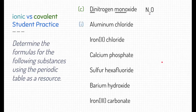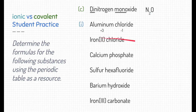Aluminum chloride is ionic — it's made of a metal and a nonmetal. Looking at the periodic table, aluminum when it bonds with other atoms typically forms a positive three charge. Chlorine typically forms a negative one charge when bonding. So to cancel these two out, we need a ratio of one aluminum and three chlorines — giving the formula AlCl3.